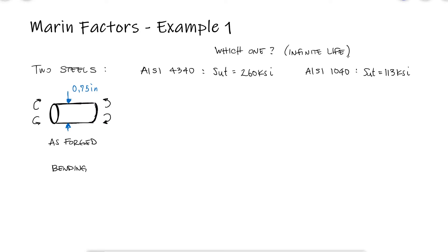This is the first example for the Marin factors main video — the link is in the description. If we're designing the rods for infinite life, the material property we're interested in is the endurance limit, which is the fatigue strength for 1 million cycles or more for steels. We use the Marin factors to get a more reliable estimate of that endurance limit.